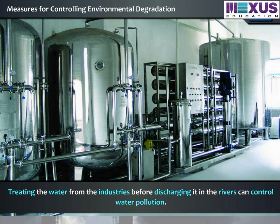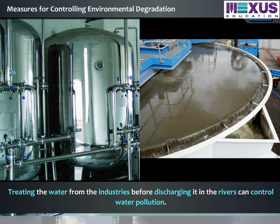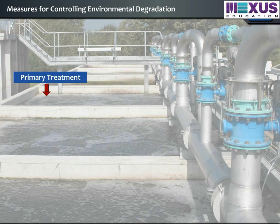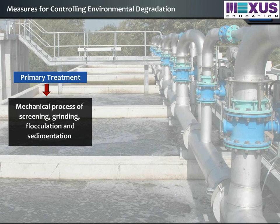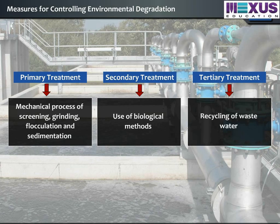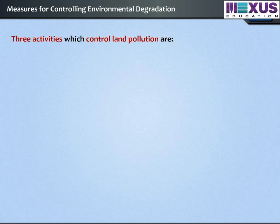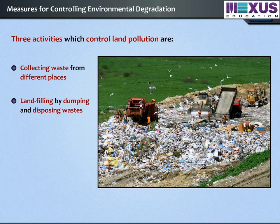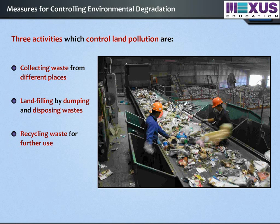Treating the water from the industries before discharging it into rivers can control water pollution. The liquids from the industries can be treated in three phases: the primary treatment by mechanical processes like screening, grinding, flocculation, and sedimentation; secondary treatment which includes the use of biological methods; and tertiary treatment which includes recycling of waste water. Three activities which control land pollution are collecting waste from different places, landfilling by dumping and disposing wastes, and recycling waste for further use.